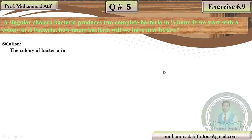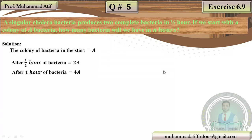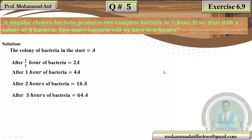Suppose the starting colony is A. After half an hour: 2A. After 1 hour: 4A. After 2 hours: 16A. After 3 hours: 64A. So we have a sequence: 4A, 16A, 64A, and so on. The sequence doubles each half-hour step.